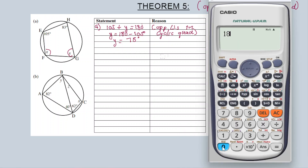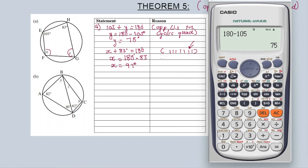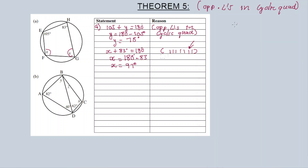So y is equal to 75 degrees. For x: x plus 83 equals 180 degrees. The reason is opposite angles in a cyclic quad are supplementary. So x equals 180 minus 83, which gives x equals 97 degrees. That is the answer for part A.